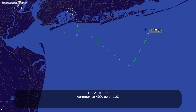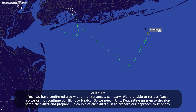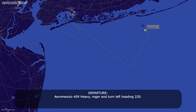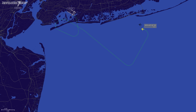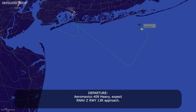Departure, Air Mexico 409. Air Mexico 409, go ahead. Yes, we have confirmed with the company, we are unable to retract flaps, so we cannot continue our flight to Mexico. We need an area to develop checklists and prepare our approach to Kennedy. Air Mexico 409 heavy, roger, turn left heading 220. We would like to ask — what runway will you use? Expect RNAV Zulu, runway 13R approach. Air Mexico 409, expect RNAV Zulu, runway 13R approach. Thank you.